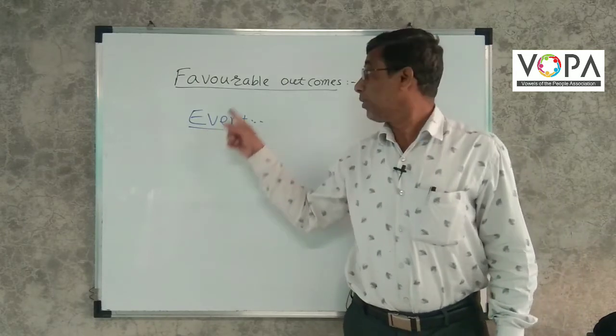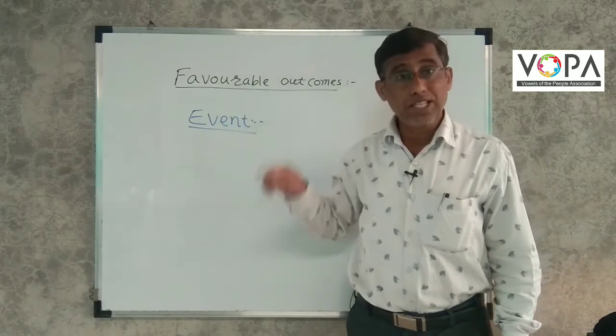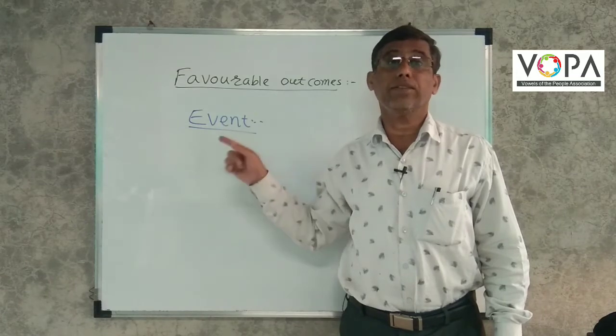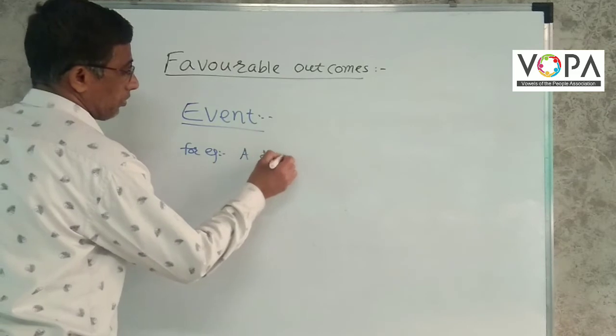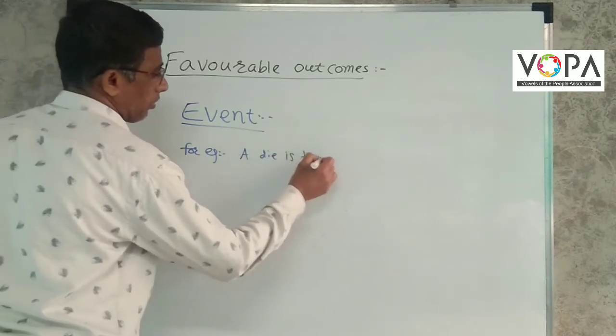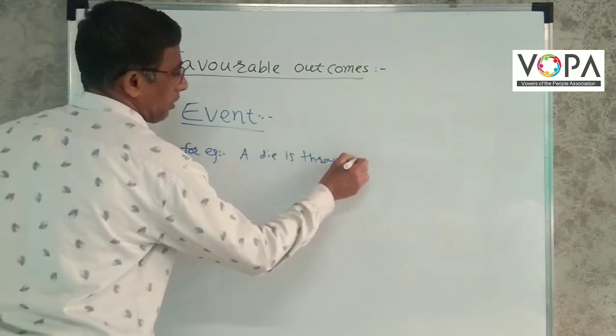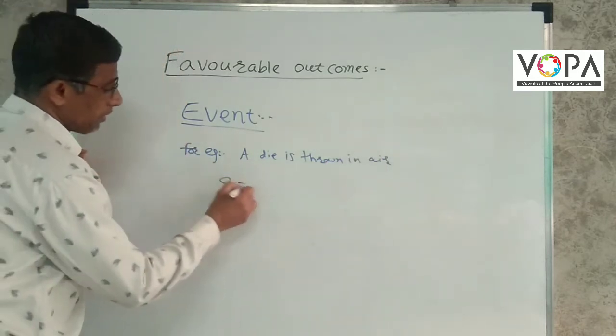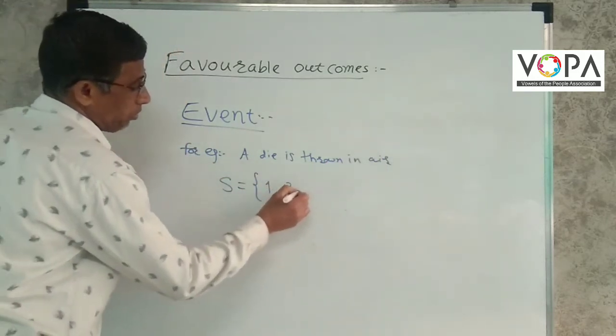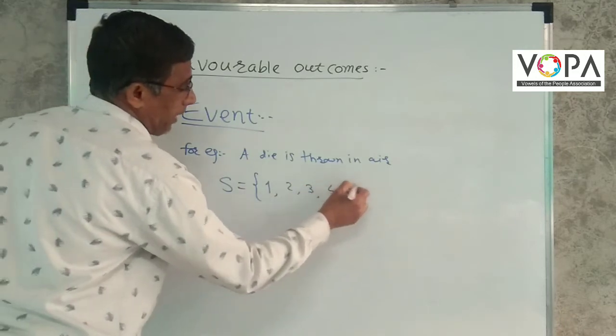For example, a die is thrown in here. Then the sample space is 1, 2, 3, 4, 5, 6.